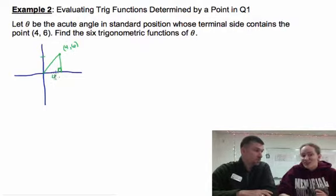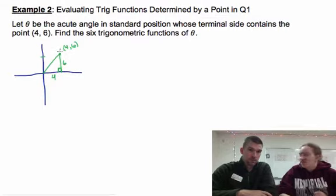Since x is left and right, that means that's four. And up and down would be six. We get those numbers from this point because we had to go four out and six up.